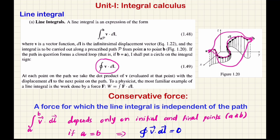For a conservative force, suppose the initial and final points are the same — A is equal to B. This is a closed line integral. If A is equal to B for a conservative force, the closed line integral of v·dl will be 0. The upper and lower limits are the same, so the integral vanishes. This is a peculiarity of the conservative force, or a conservative vector field.